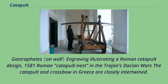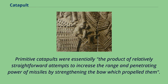Primitive catapults were essentially the product of relatively straightforward attempts to increase the range and penetrating power of missiles by strengthening the bow which propelled them.